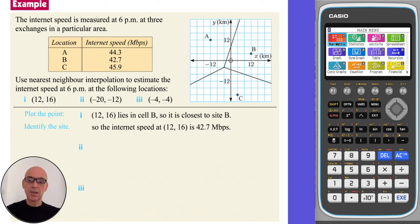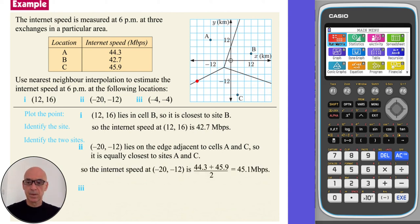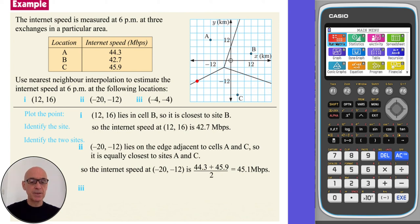In part 2, plotting the location (−20, −12), we see that the point lies on the edge adjacent to cells A and C, so it is equally closest to sites A and C. So we estimate the internet speed at this location by averaging the internet speeds at site A and site C, as shown, giving a speed of 45.1 megabytes per second.